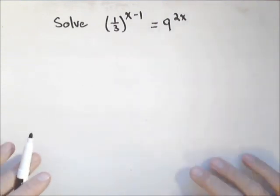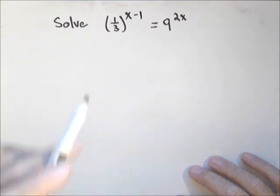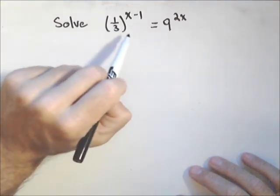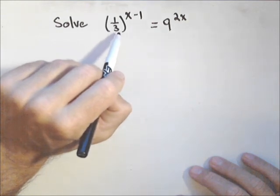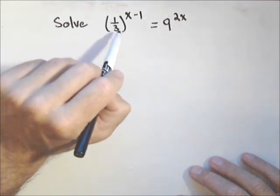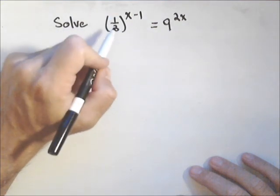Sometimes we'll be able to solve exponential equations without using a calculator, without using logarithms. But when we can, what we want to look at is the base. Is there any way to write these two sides so that they have the same base? Well, I could write the left-hand side as base 3 and I could write the right-hand side as base 3. So let's see how we could do this.